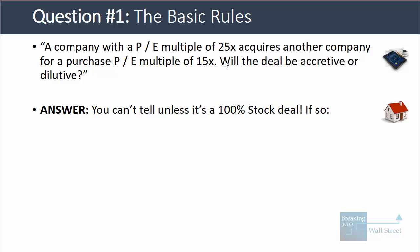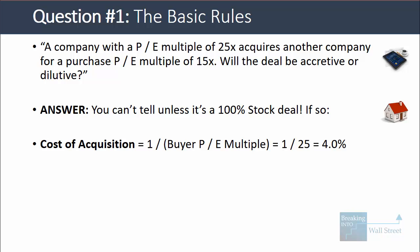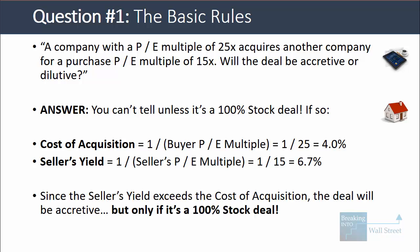You'll see online in many places that if a company with a higher PE multiple acquires a company with a lower PE multiple, it's accretive — but that's not quite true. It's only accretive if it's an all-stock deal and you ignore everything else beyond the effects of additional shares, foregone interest on cash, and interest paid on new debt. The reason it's accretive in a 100% stock deal is that the cost of the acquisition is the reciprocal of the buyer's PE multiple: 1/25 = 4%. The seller's yield is 1/15 = 6.7%. Since the seller's yield is above the cost of acquisition, the deal will be accretive.